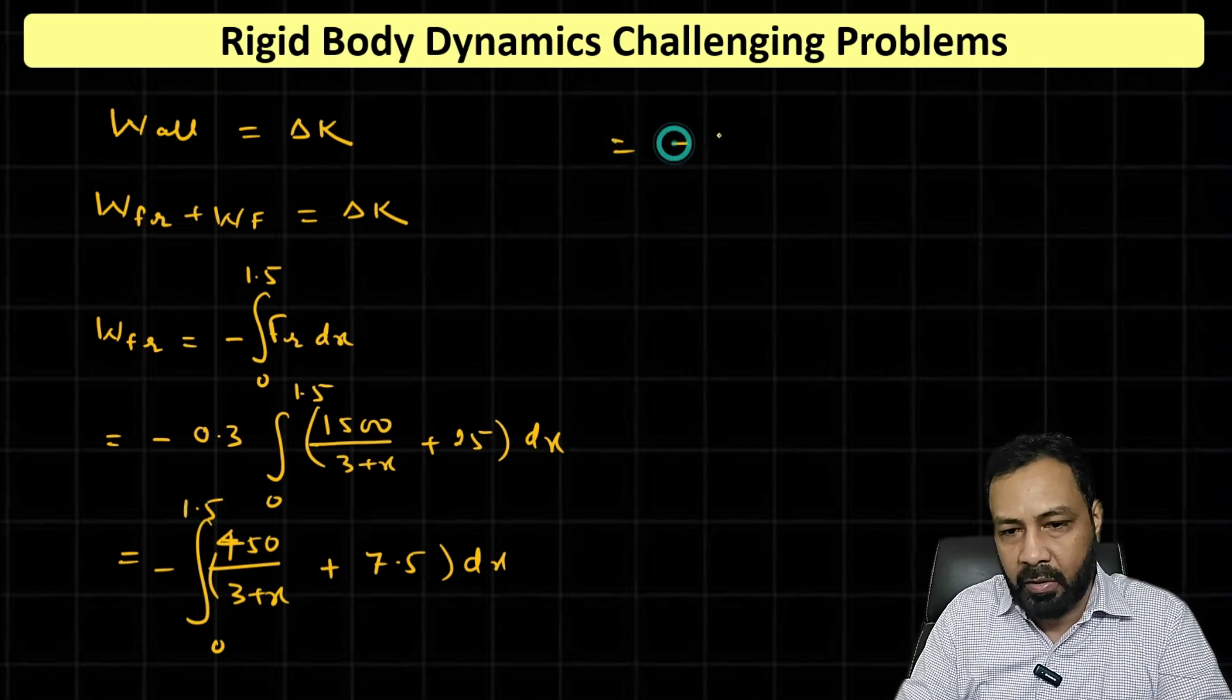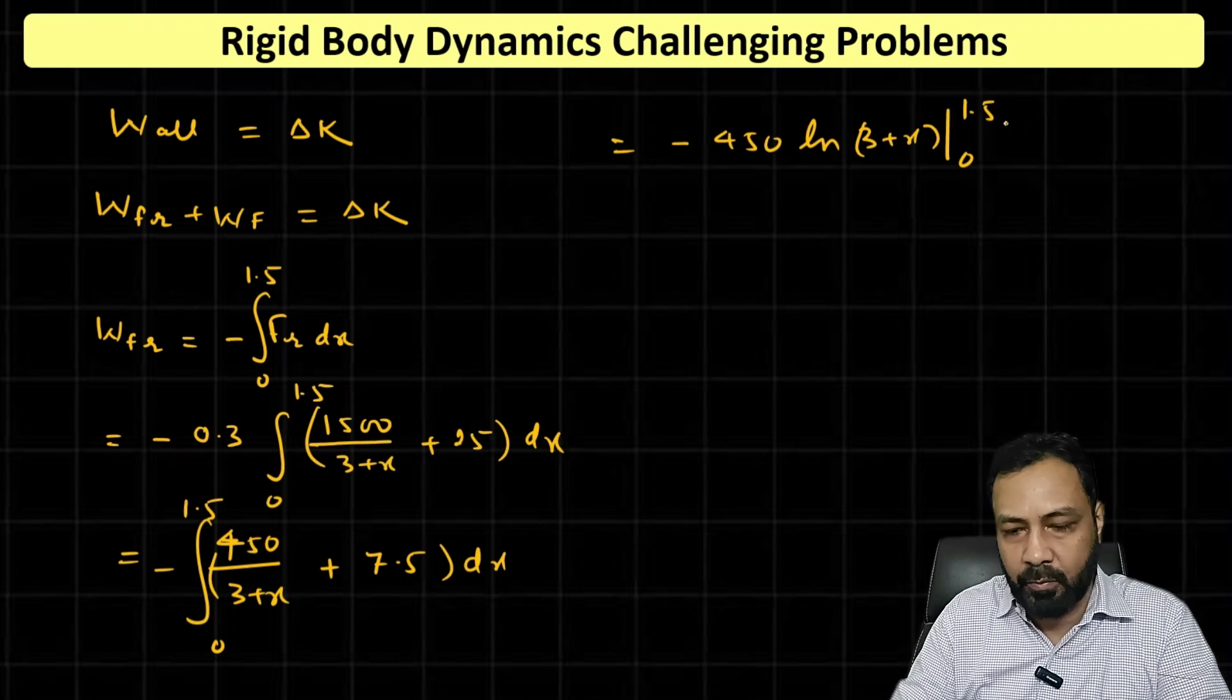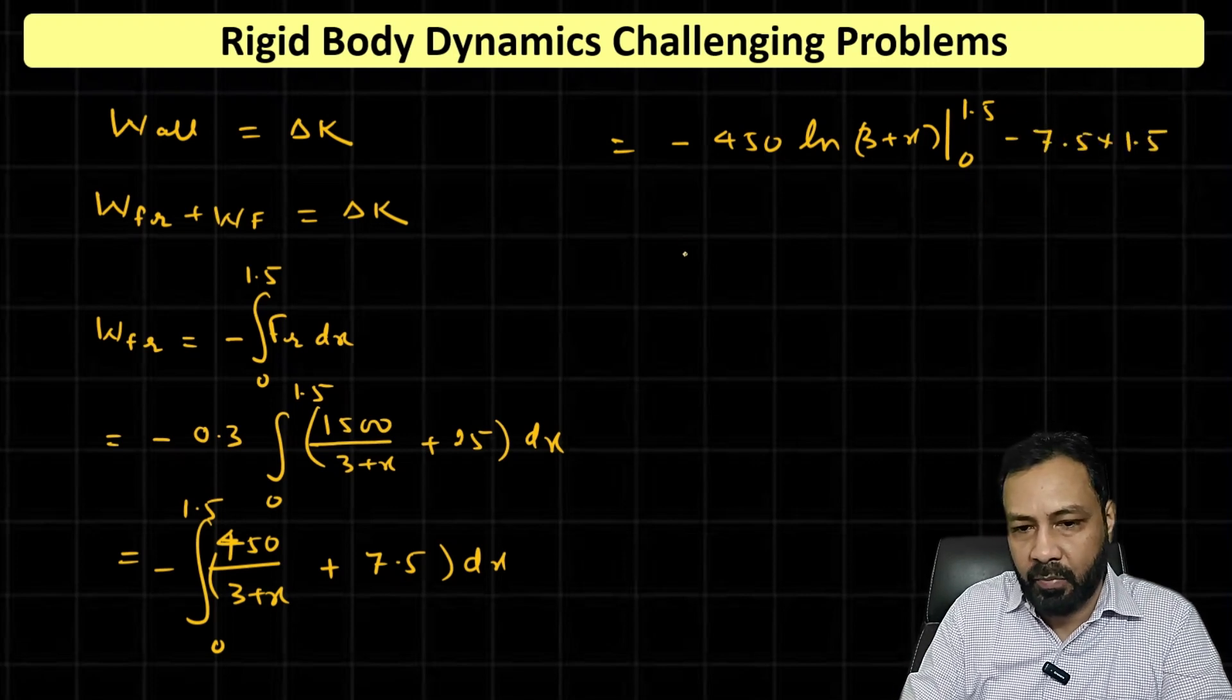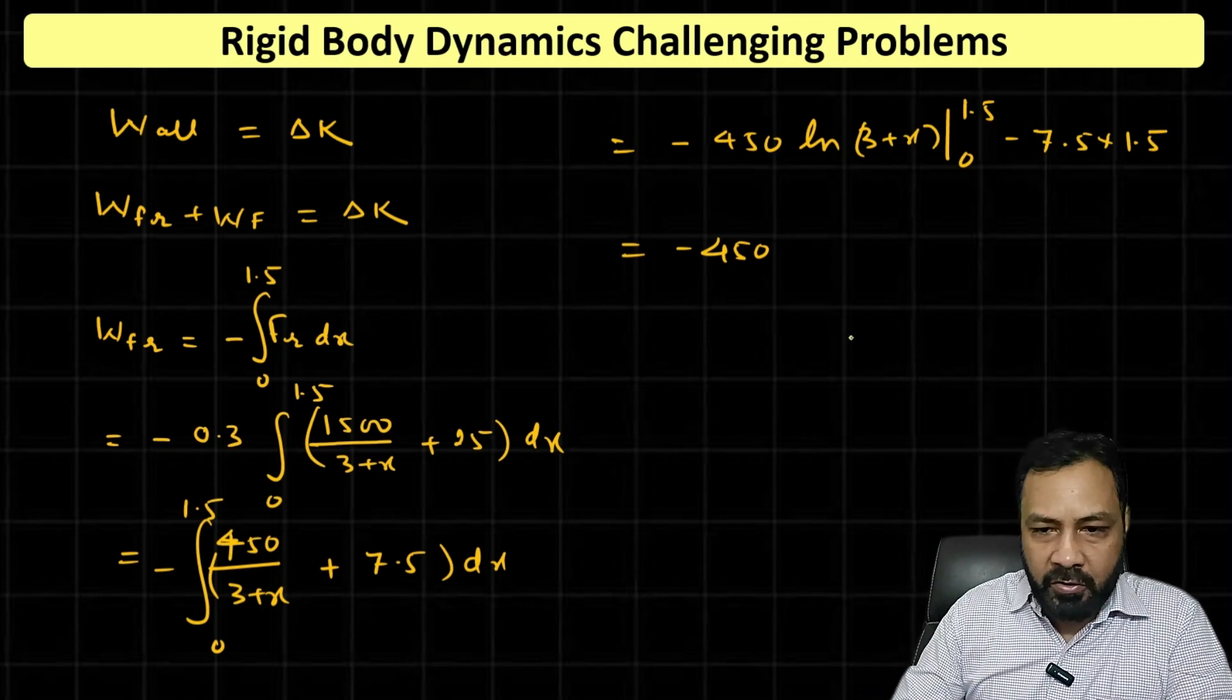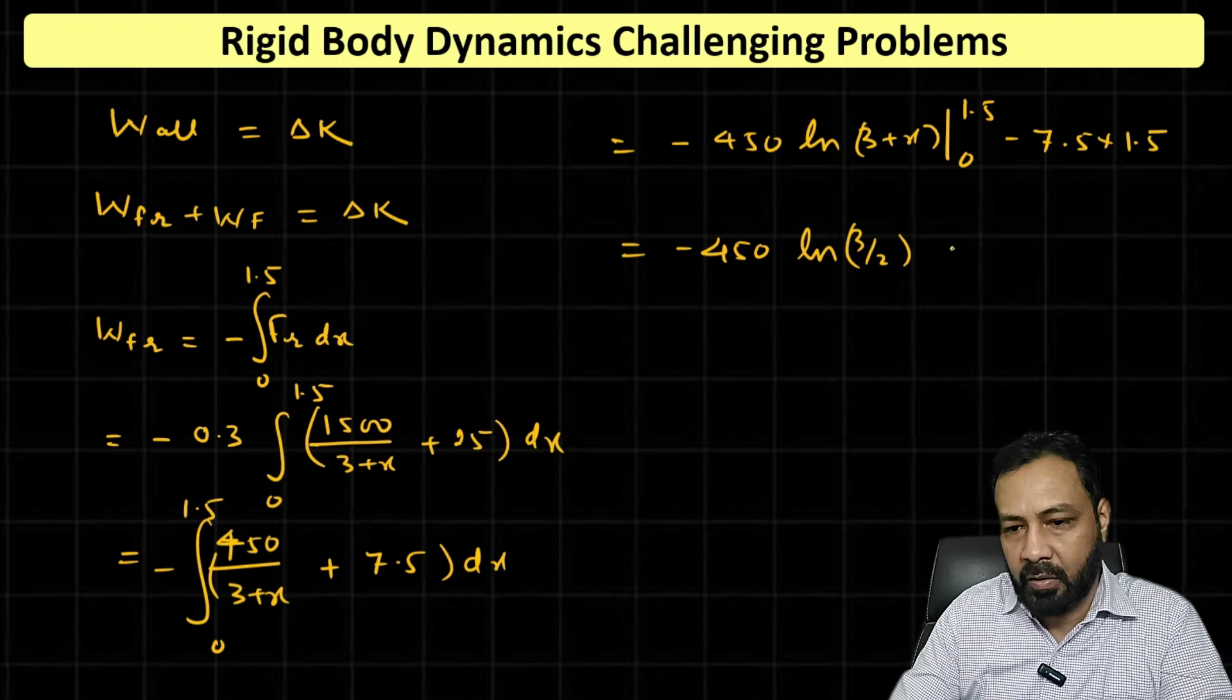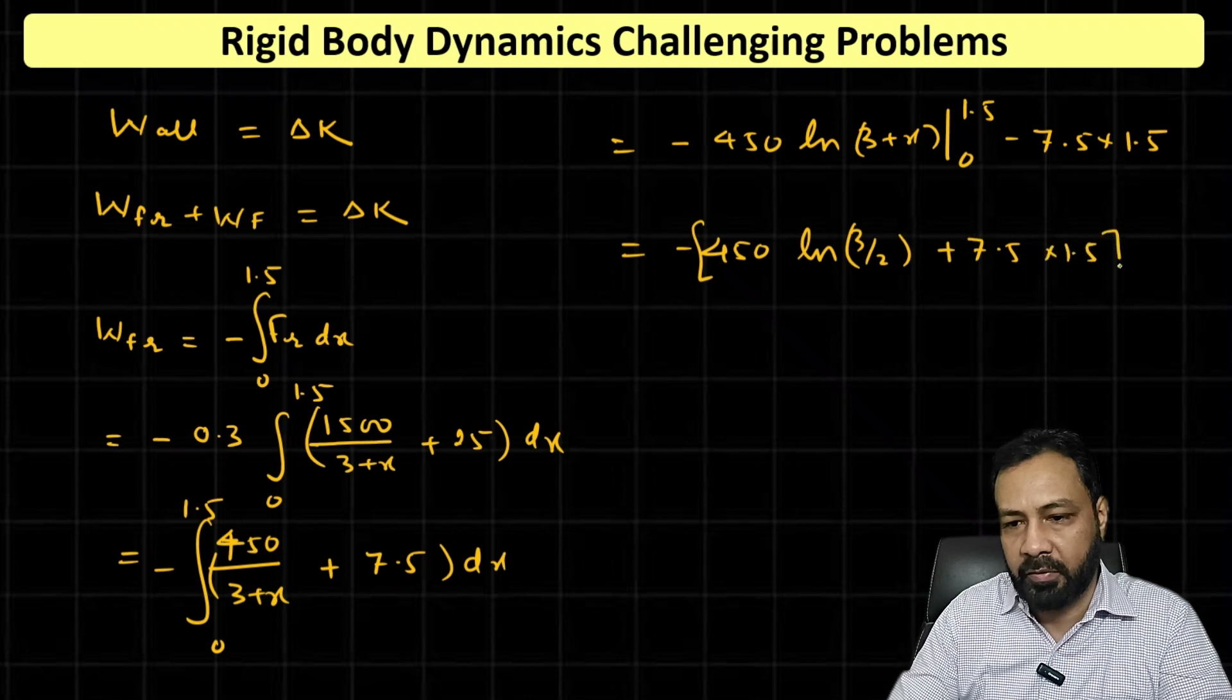Integrating, it will be minus 450 ln(3 plus x) from 0 to 1.5, and that will be simply minus 7.5 into 1.5. This is minus 450, and that is going to be ln(4.5 by 3), which is ln(3 by 2), plus 7.5 into 1.5.